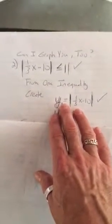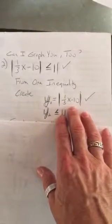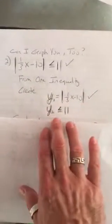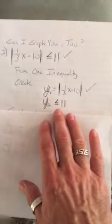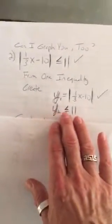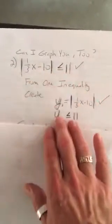One is going to be an equation: y1 equals the absolute value of 1 third x minus 10, and the other is going to be an inequality: y2 is less than or equal to 11. The less than or equal to 11 is from the original problem, and y1 equals what's on the left side with the absolute value bars.